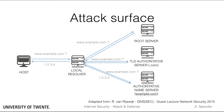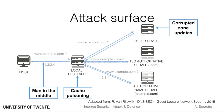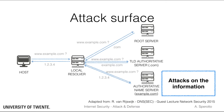DNS is a core service in the internet. However, given how it works and its complexity, it offers quite extensive attack surfaces. For example, man-in-the-middle attacks, cache poisoning attacks, and injection of corrupted data in zones are some of the possible attacks. We can qualify those as attacks on the information in DNS.